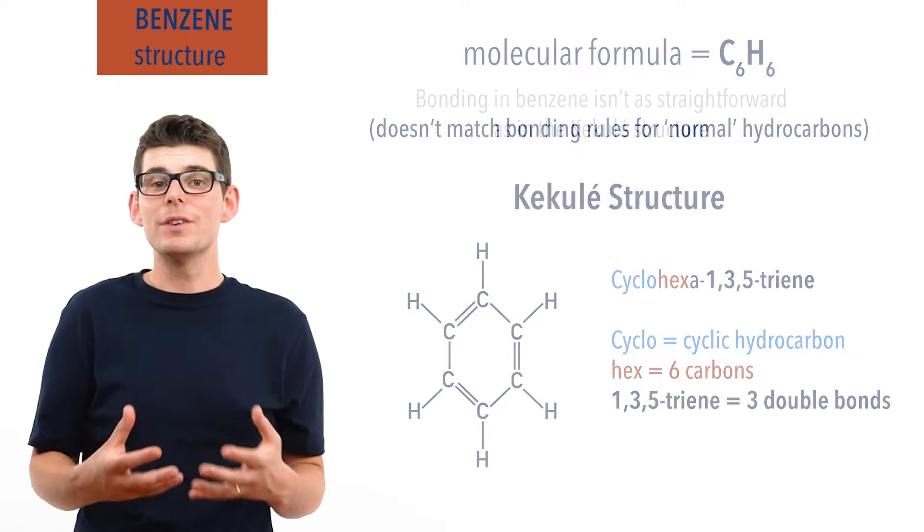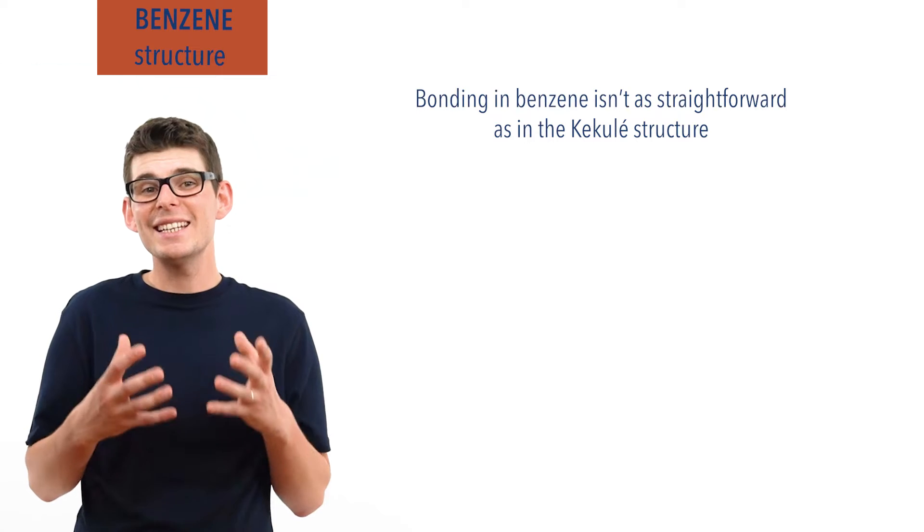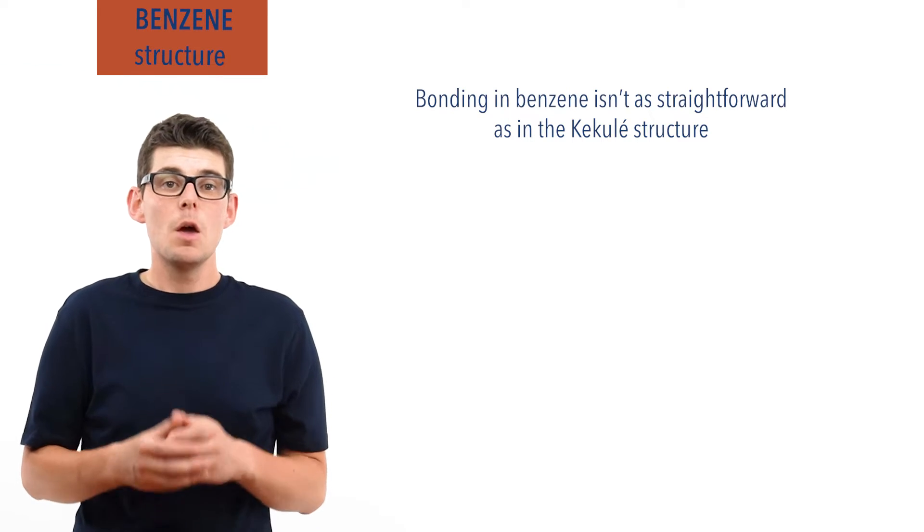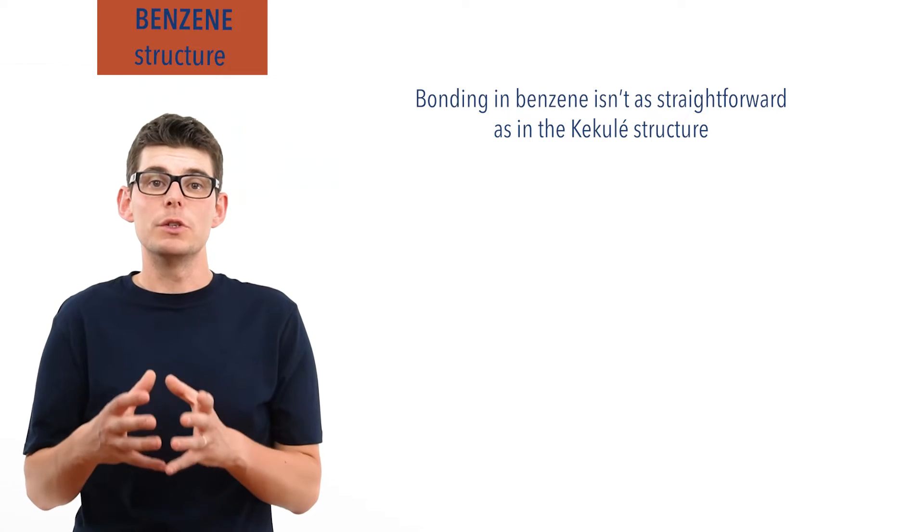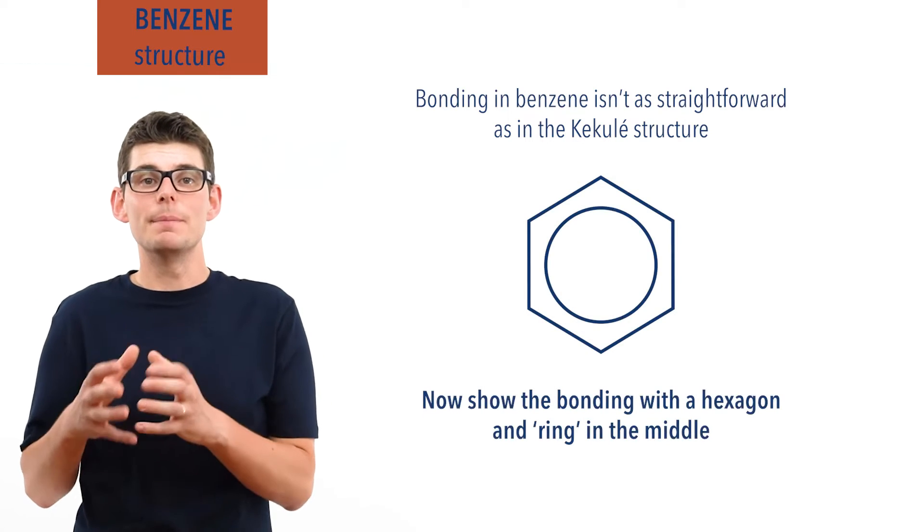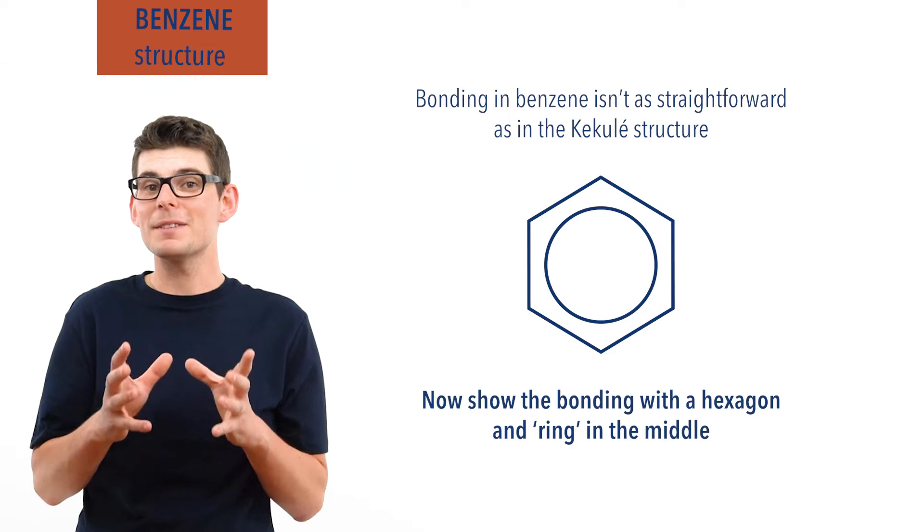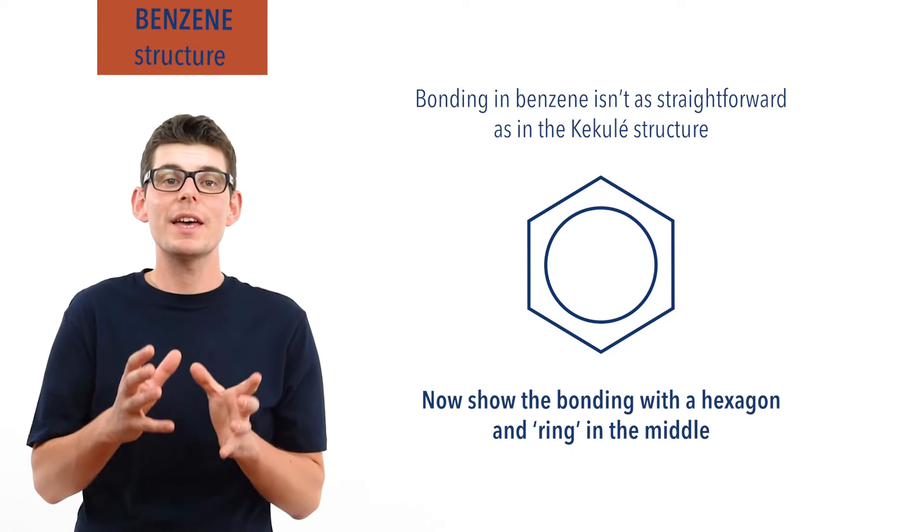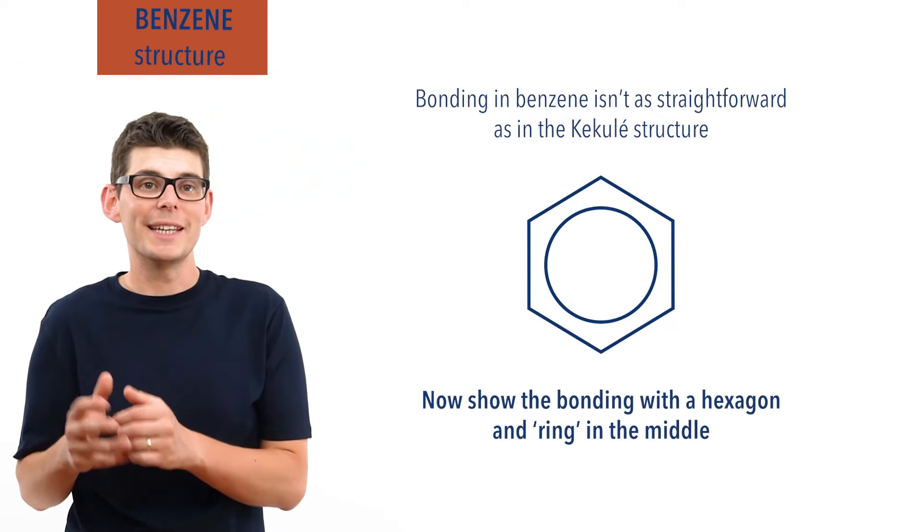Over time it became clear that the carbon bonding in benzene is a little less straightforward than the model proposed by Kekulé. We now more commonly show the bonding using a hexagon with a ring in the middle. This ring will be explained in more detail later in the video, but let's first look at why the Kekulé structure doesn't quite fully add up.